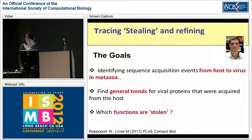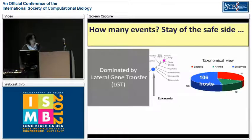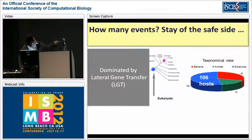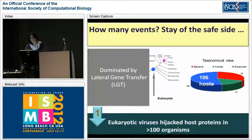Nadav raised three goals. The first: to identify cases in which viruses hijack proteins and sequences from the host. The second: can we say something general and understand something we didn't know before by looking at them? And third: which functions are stolen? Going back to the tree of life, we wanted to stay on the safe side and eliminate all discussion about bacterial work, because there is a lot of gene transfer and it's too messy to deal with. We focused only on eukaryotes and specifically on metazoa. We found that eukaryotic viruses hijacked host proteins in more than 100 organisms - it's not just human or one specific organism.